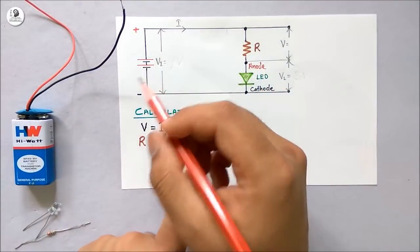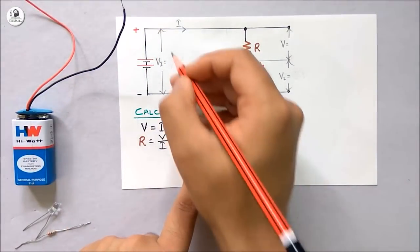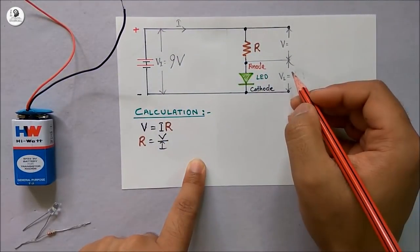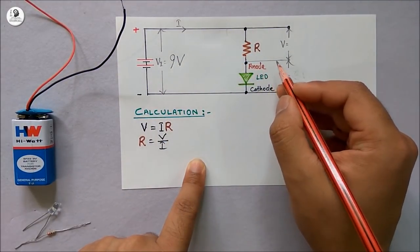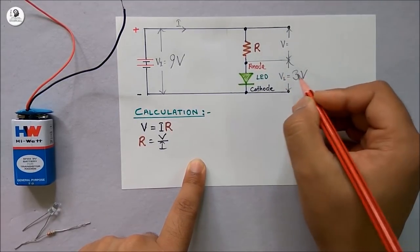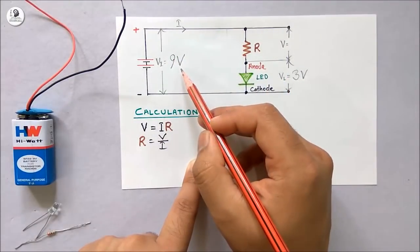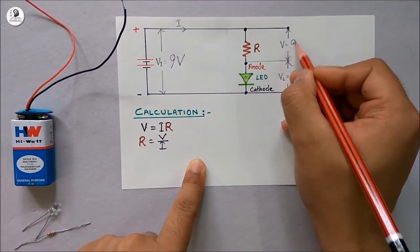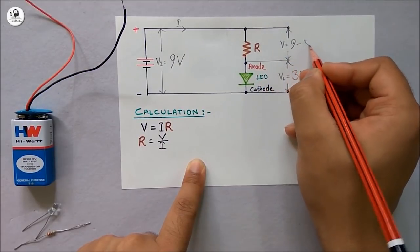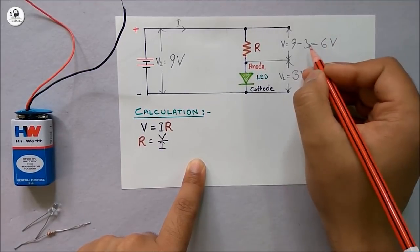Here I will use a 9 volt battery as an input. So the input voltage will be 9 volt, and we have already got the forward voltage of the LED which is 3 volt. If we deduct 3 volt from the 9 volt, we will get the voltage drop across the resistance. So the voltage drop across the resistance will be 6 volt.